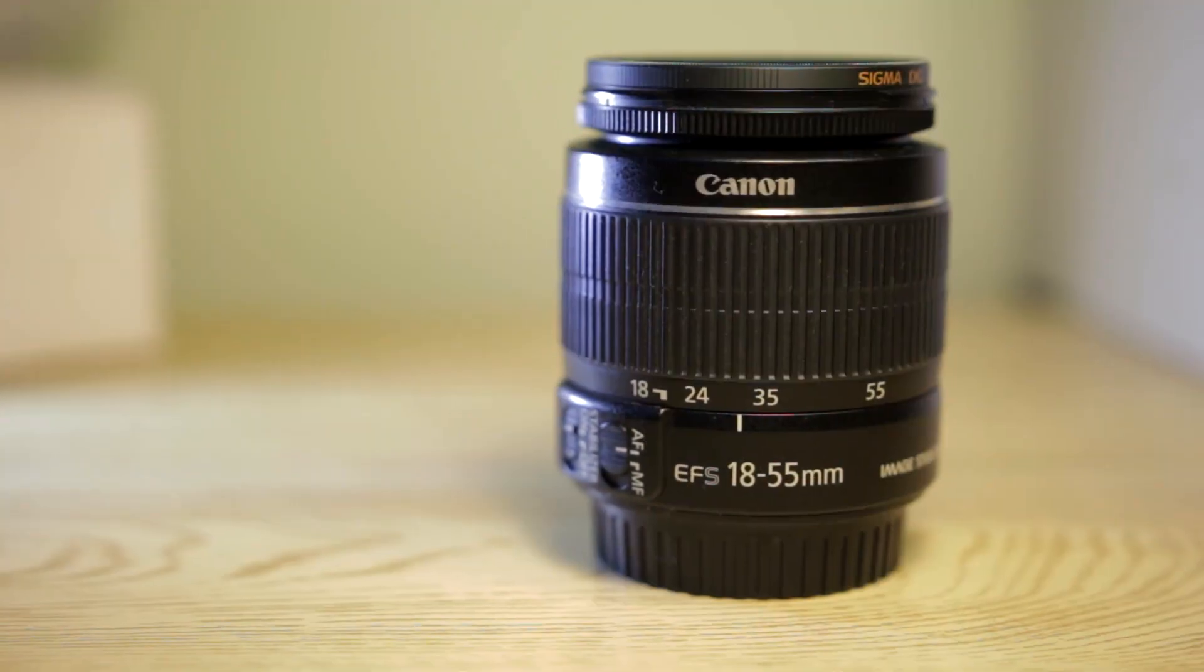So when you buy a new entry-level camera, you are faced with two kit lens choices. Basically, the 18-135 and the 18-55. So how much difference are they?